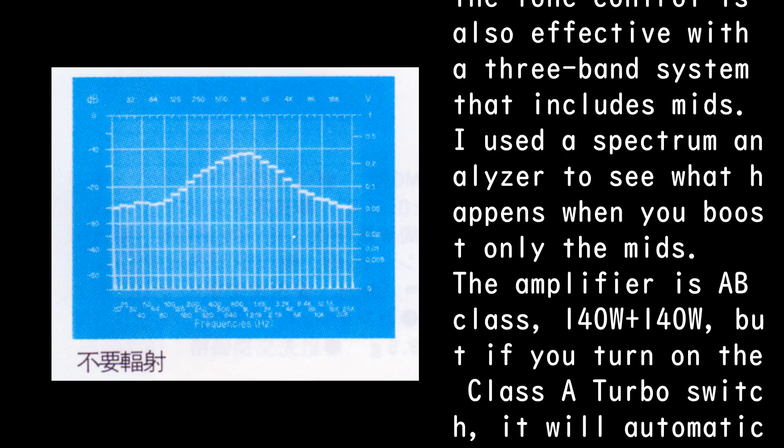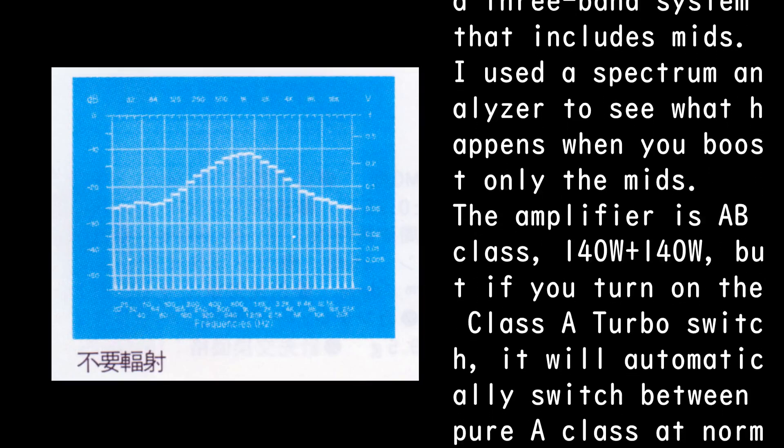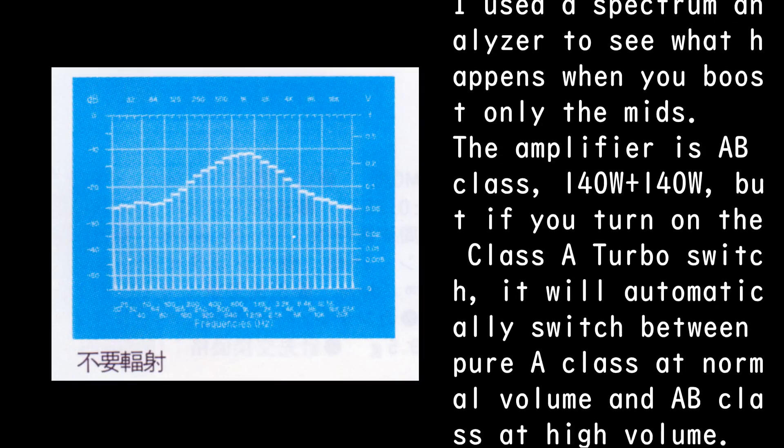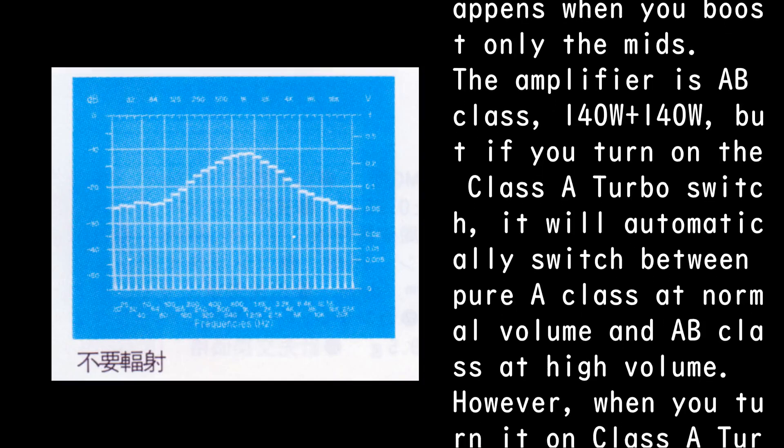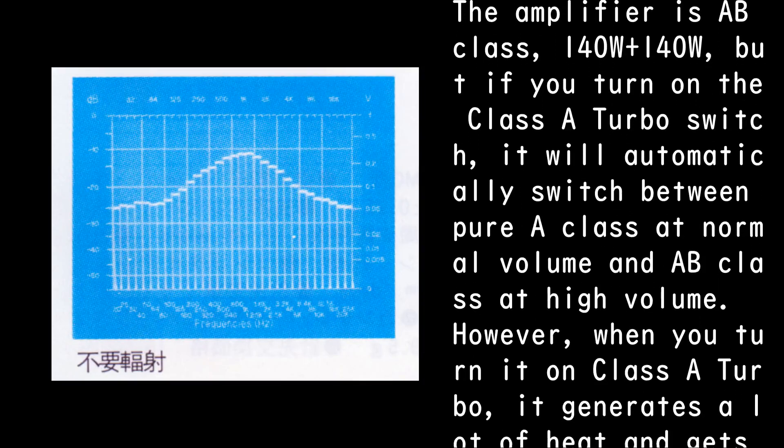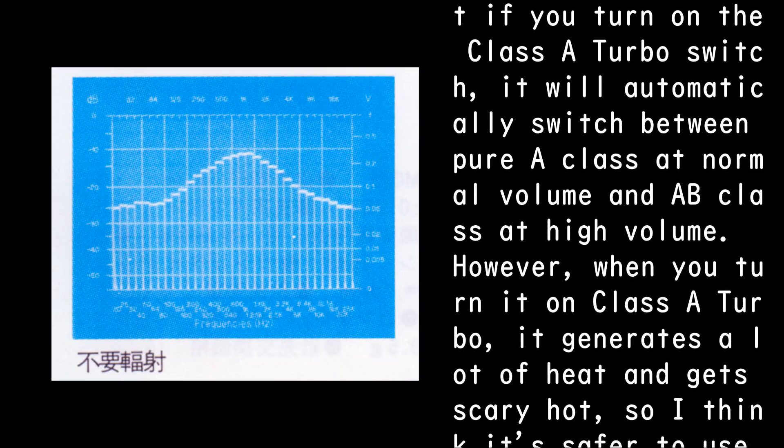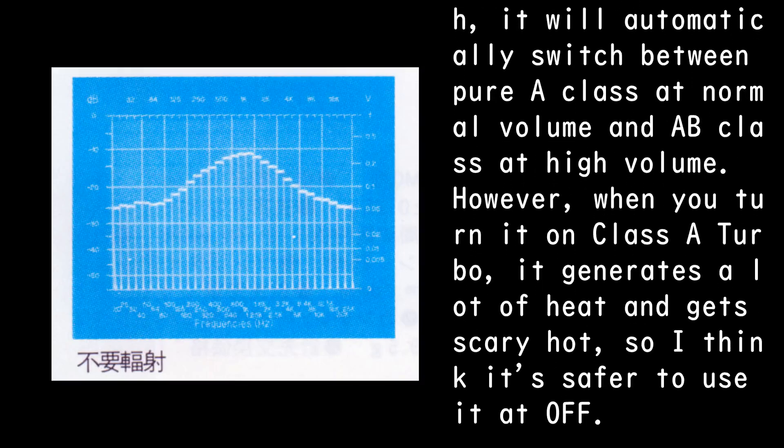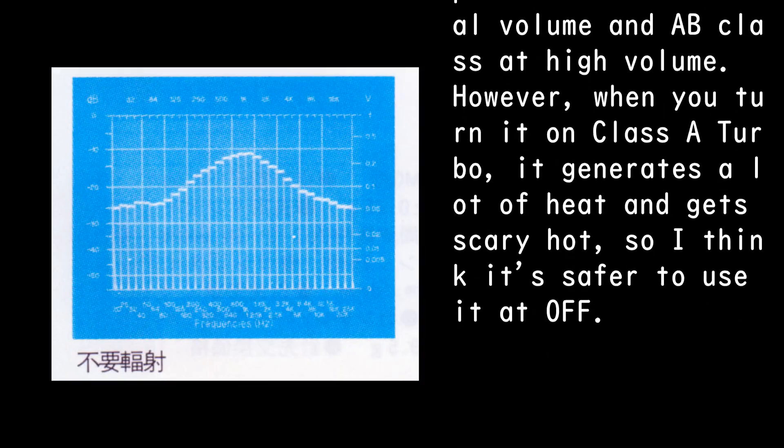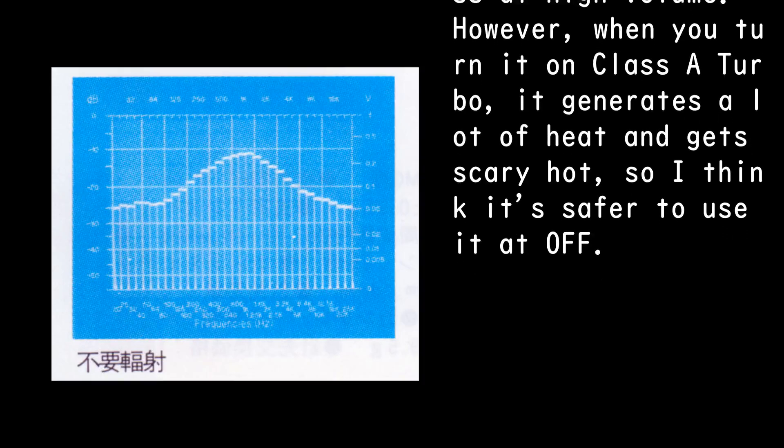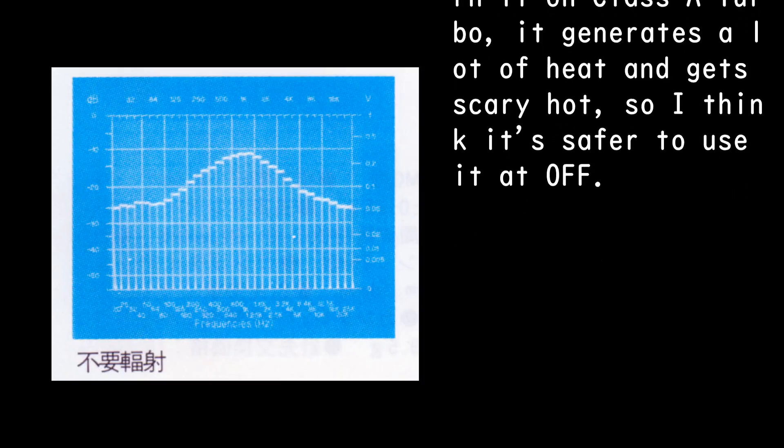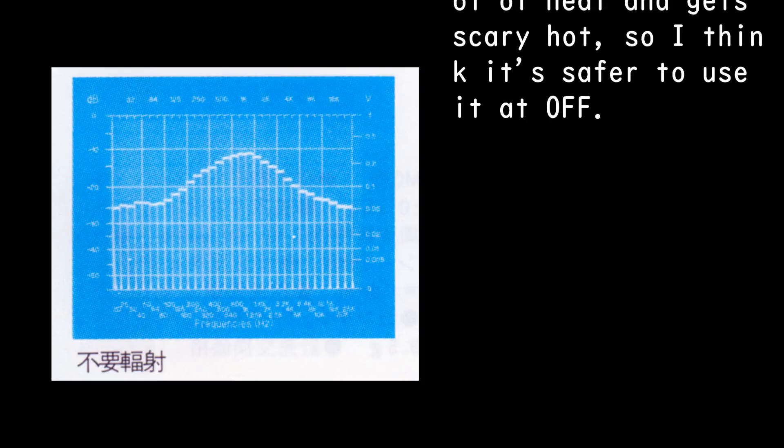The amplifier is AB class, 140W plus 140W, but if you turn on the class A turbo switch, it will automatically switch between pure A class at normal volume and AB class at high volume. However, when you turn it on class A turbo, it generates a lot of heat and gets scary hot, so I think it's safer to use it at OFF.